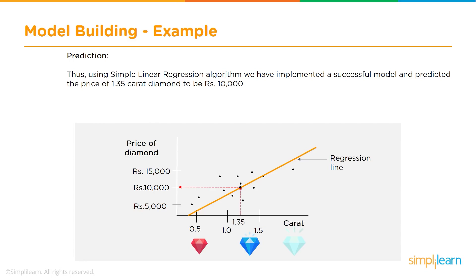Once the training and testing are completed, the model is deployed and we can use it to determine what is the price of 1.35 carat diamond — which was our problem statement. Now that we have the best fit for this given data, we have the price of 1.35 carat diamond, which is $10,000. So this is one example of how this whole process works.